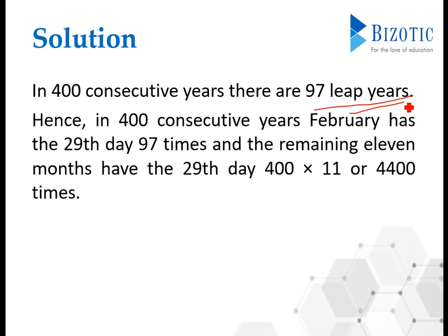If you leave those leap years, then the remaining years will have 11 months. All these leap years mean those years in which February has the 29th as a date, so that will be 97 itself. In the rest, 400 consecutive years times 11 months gives 4400 times the 29th will come.